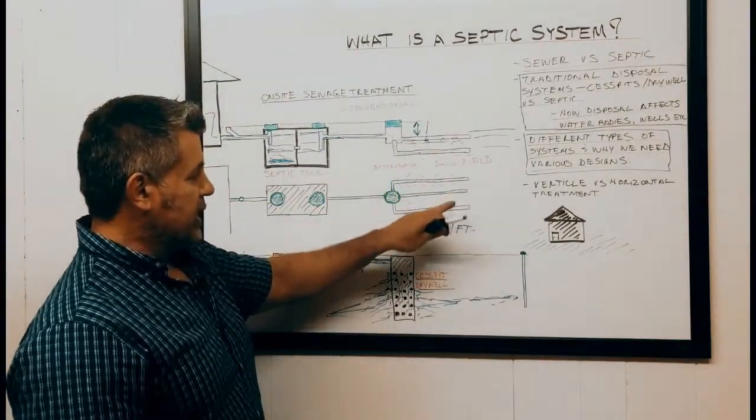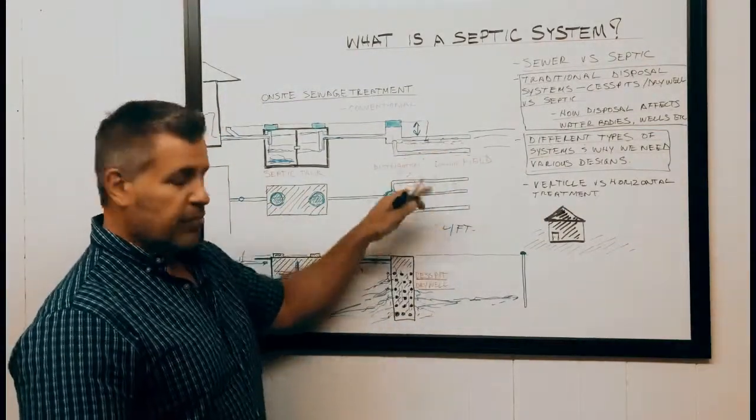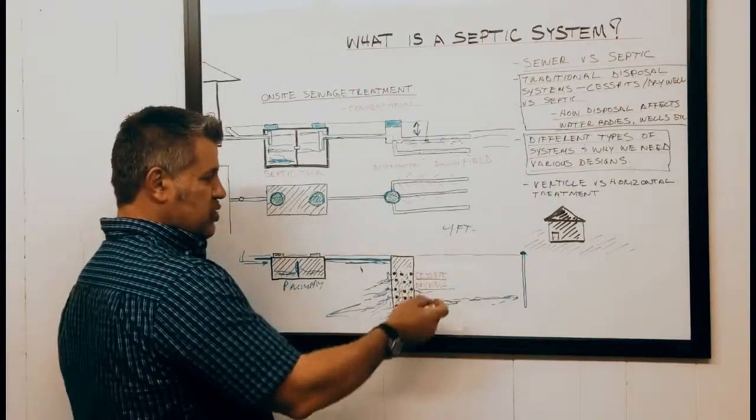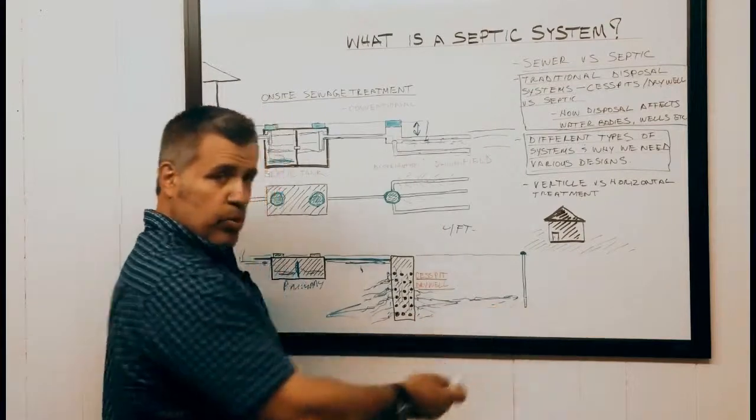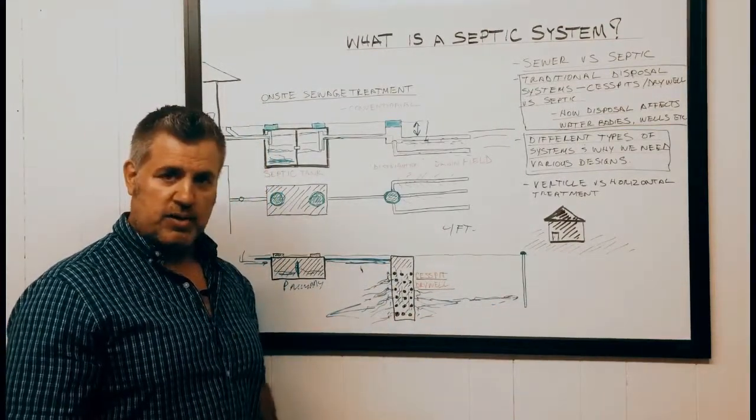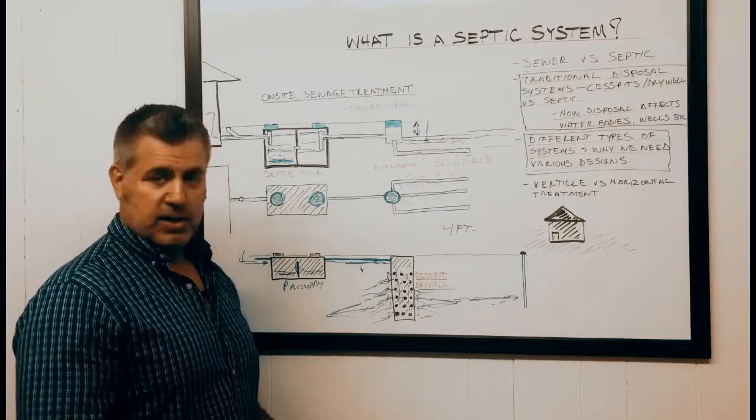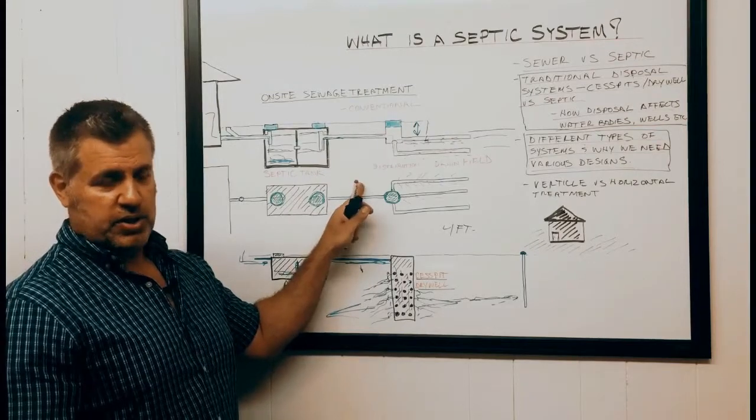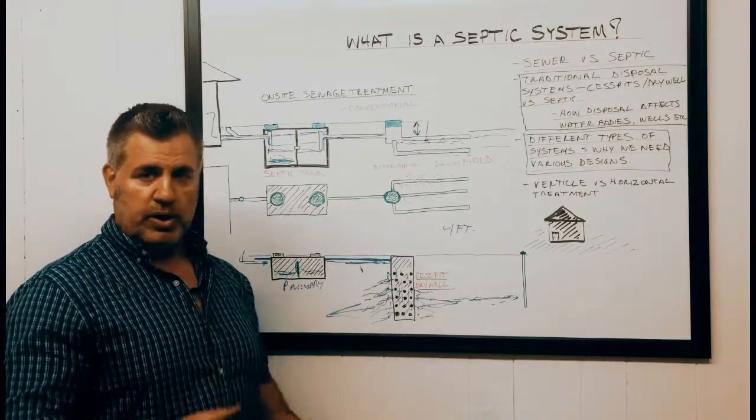We're looking at at least four foot separation in order for that effluent to be fully treated before it makes its way into a neighboring well or into other water bodies, oceans, lakes, river beds, whatever the case may be. This had its purpose as well. It's a conventional system. I'm going to be going into different types of systems as well here shortly.